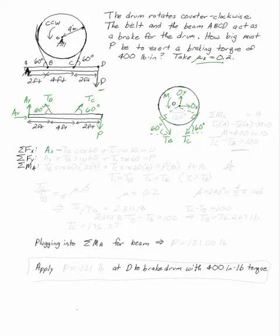So if you write your equations of equilibrium, AX minus TB cosine 60 plus TC cosine 60 equals 0. AY plus TB sine 60 plus TC sine 60 equals P.